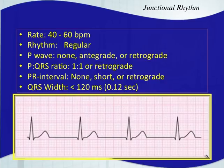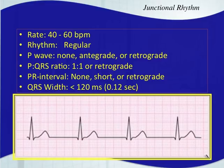Junctional rhythms can be very confusing because of so many possibilities. If you do see a P wave, you'll only have one for every QRS complex — there should not be any extra P waves. The PR interval will either be absent because there's no P wave, very short, or you'll have a retrograde P wave. The QRS width should be narrow, less than three small boxes.